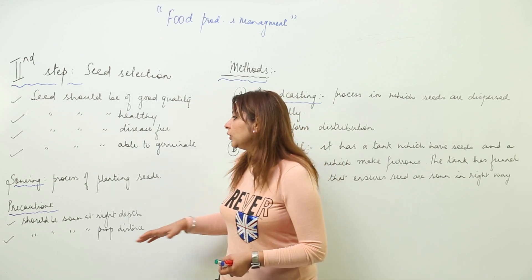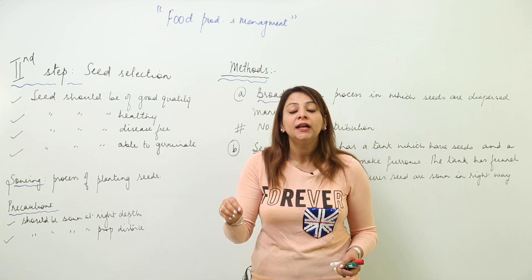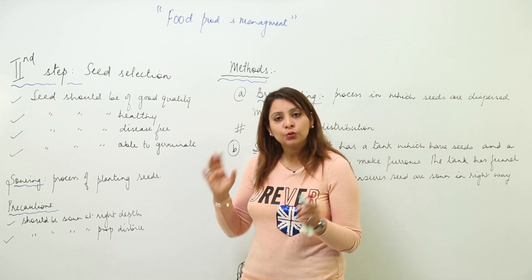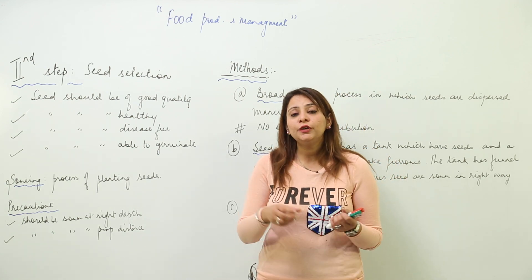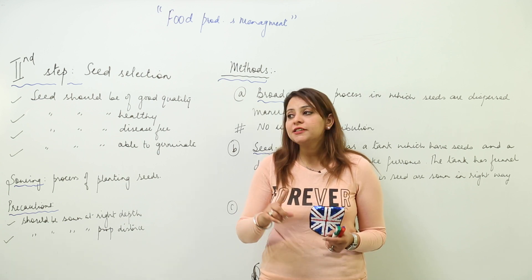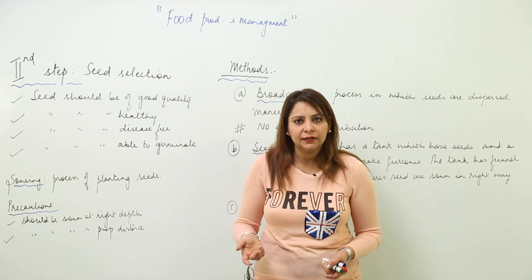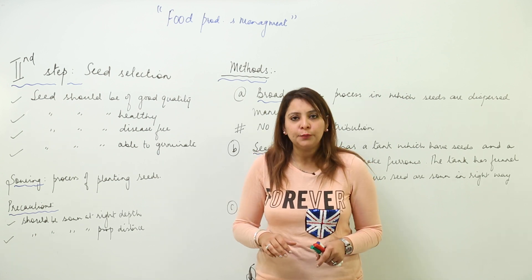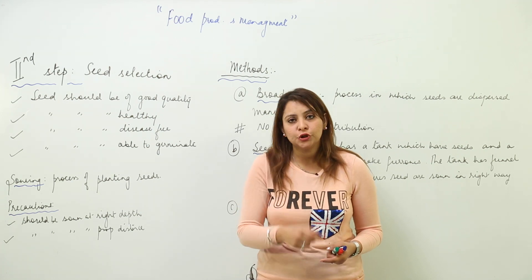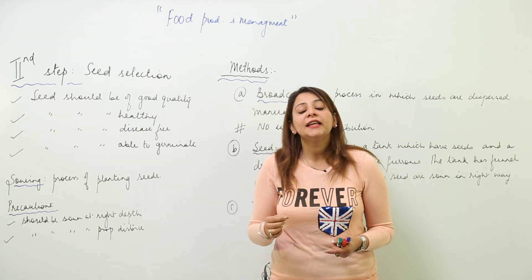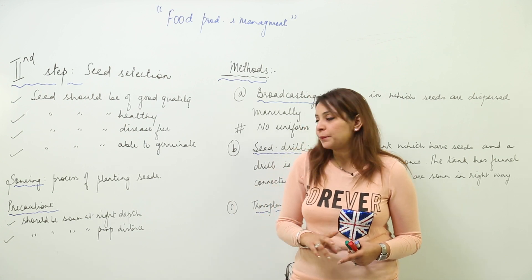Now, what do we mean by sowing? Sowing is the process of planting seeds — when you are putting seeds in the soil. In sowing, you need to focus on certain things. Seeds should be sown at the proper depth, because if seeds are too superficial, they might be carried away by birds, wind, or water. They should not be very deep either, because if they are too deep, they won't get oxygen supply and will not germinate.